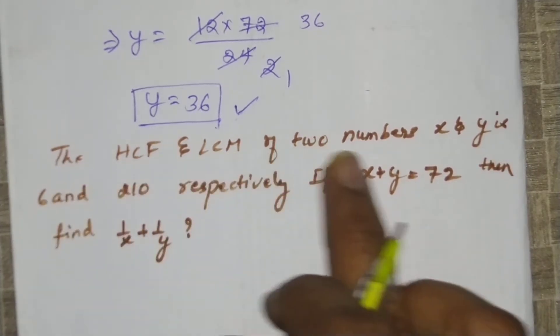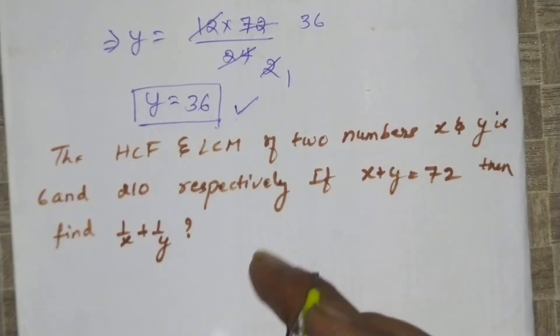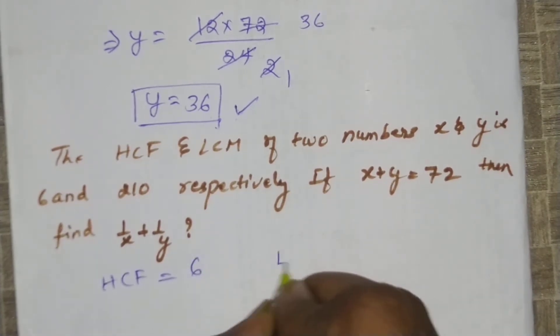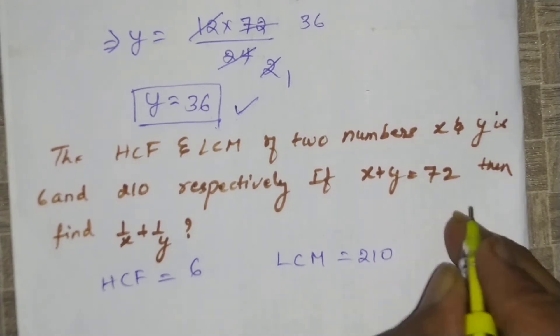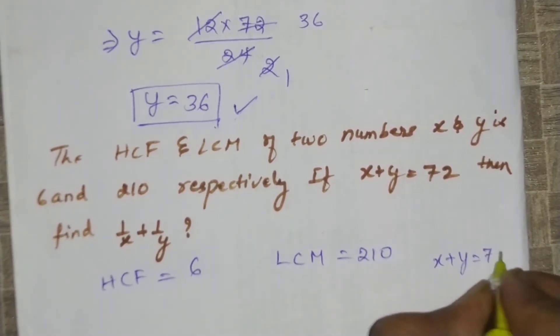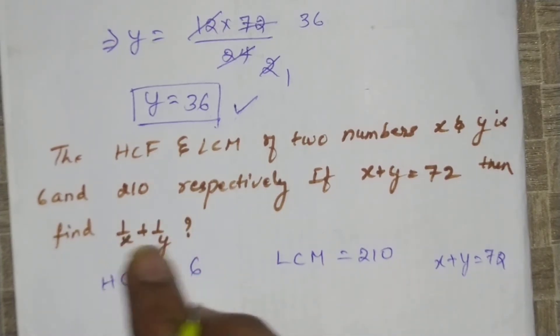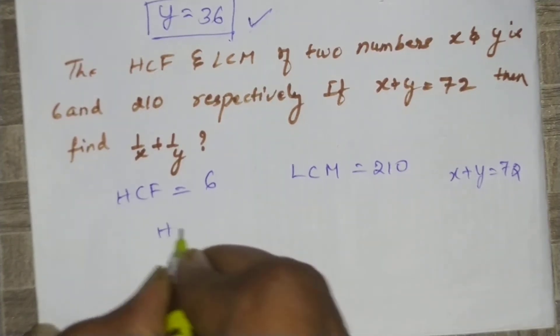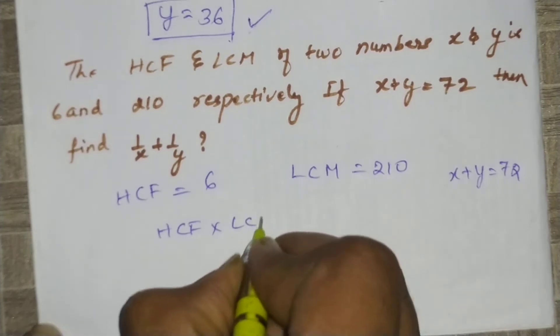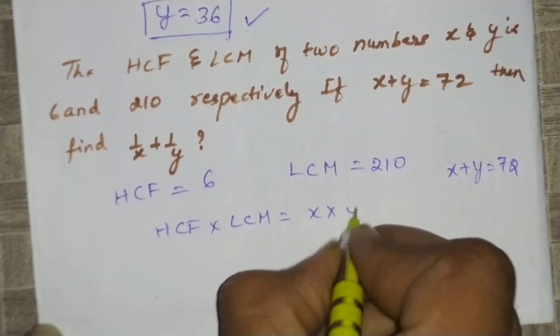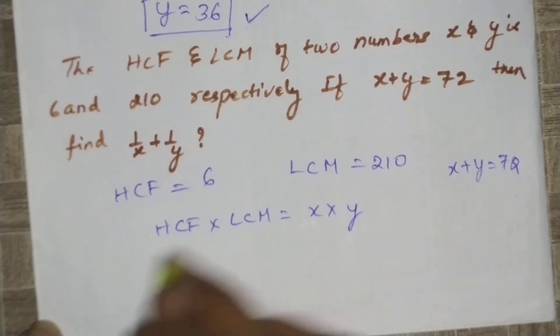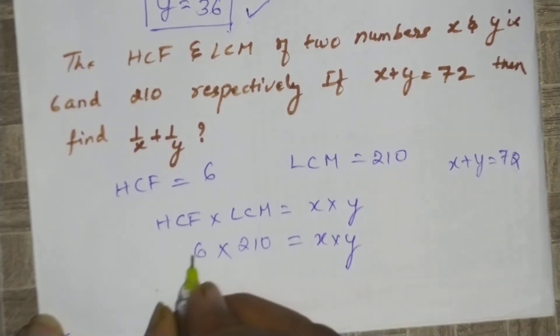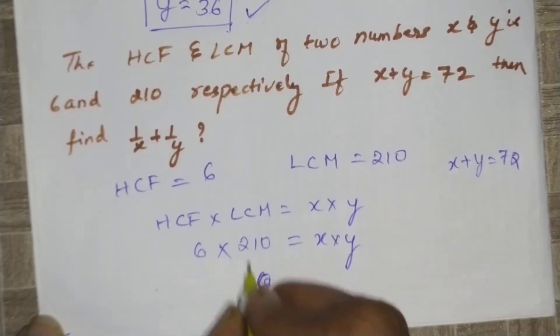First we write the values of HCF and LCM. HCF value is 6 and LCM value is 210. Using the formula HCF times LCM equals x times y, we get 6 times 210 equals x times y.